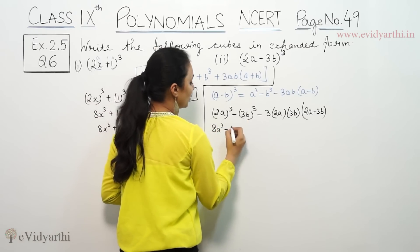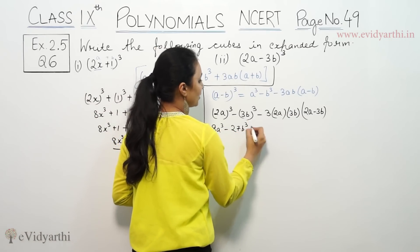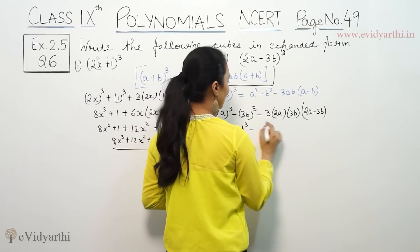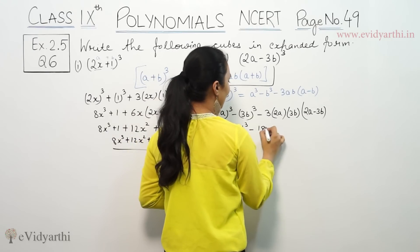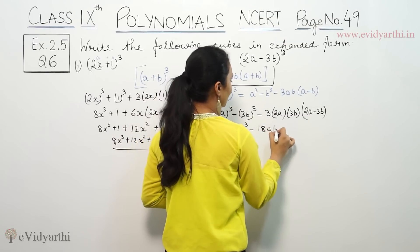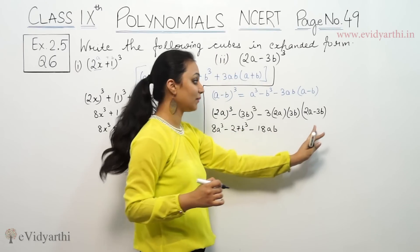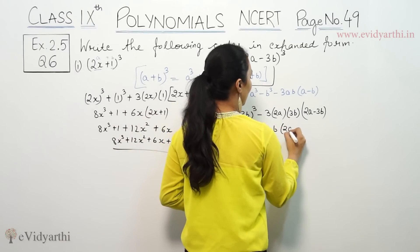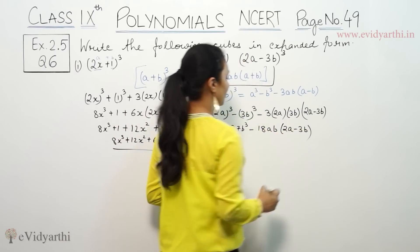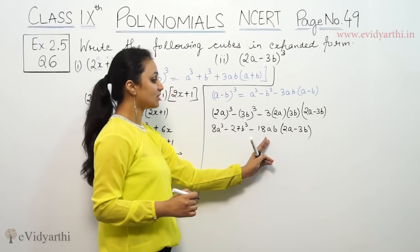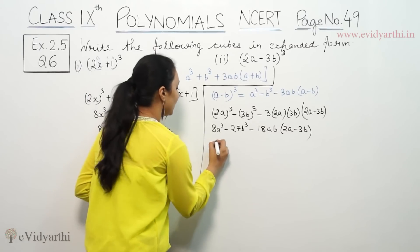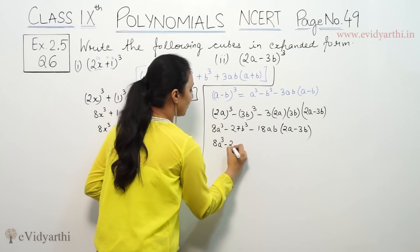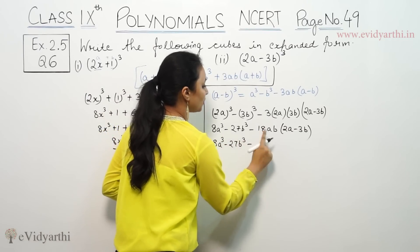So (2a) cube is 8a cube, and (3b) cube is 27b cube, minus. Then minus 3 times a times b: 3a is 2a, so 3 times 2a is 6a — these are the three terms. We have 8a cube minus 27b cube.